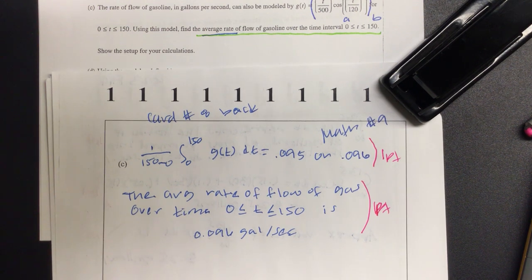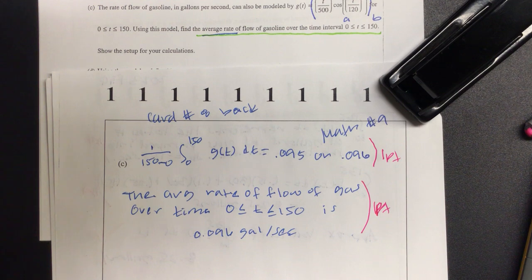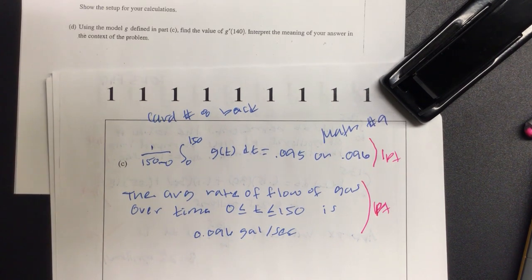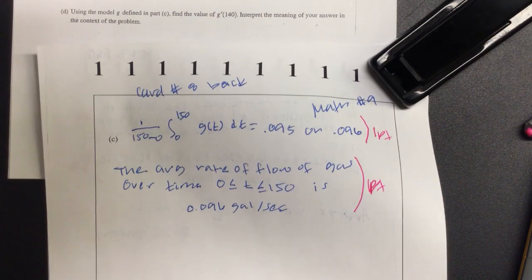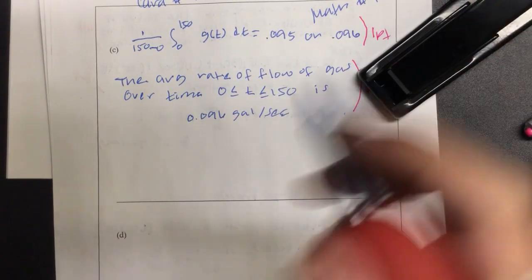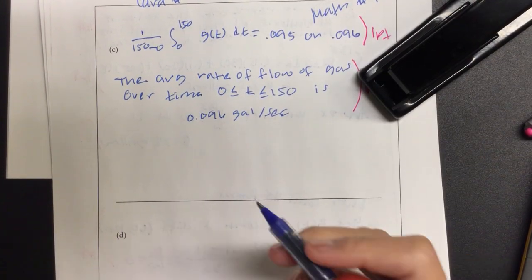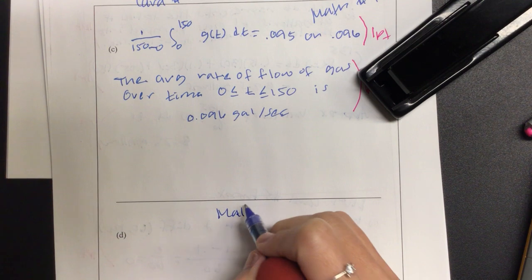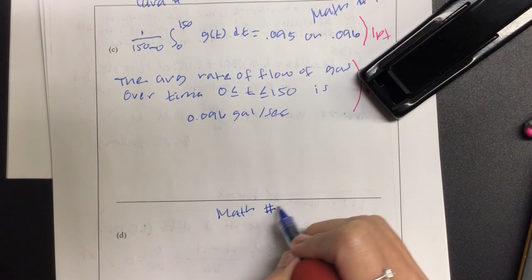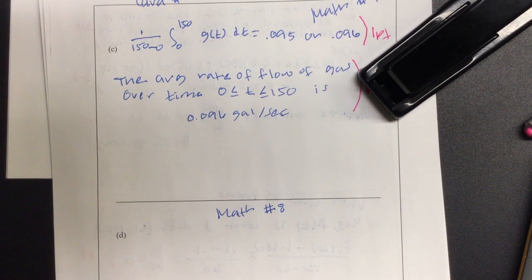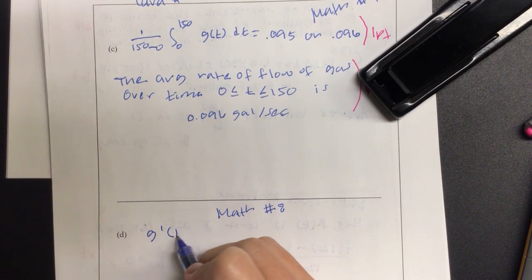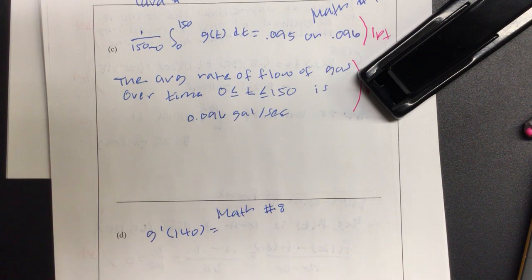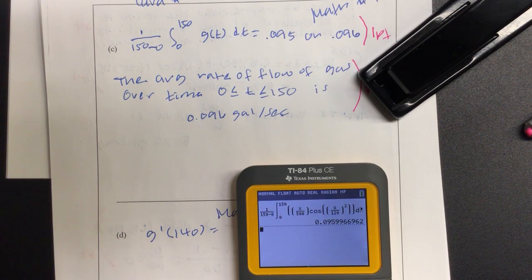Let's go on to part D. On part D, Jocelyn, read that part. Using the model G defined in part C, find the value of G prime of 140. Interpret the meaning of your answer in the context of the problem. So they're asking us to find G prime. That was math what? Math 8. Math 8. And again, because they already gave you the function, you don't have to plug it all in. But instead, you may do this. G prime of 140. And literally type it in. And be like, thank you. Math 8.